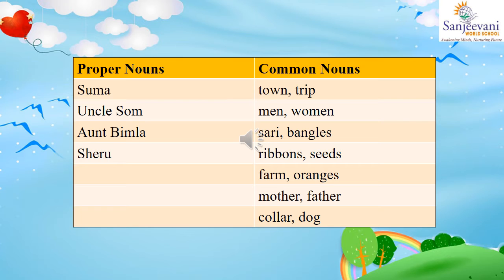'She also bought bangles and ribbons for Suma.' Bangles and ribbons are both common nouns as they are names of things. Suma is a proper noun — it is the name of a girl — but we have already written Suma, so we will not write it again.